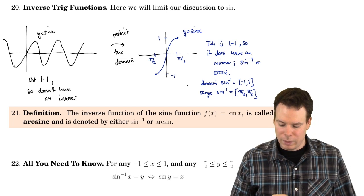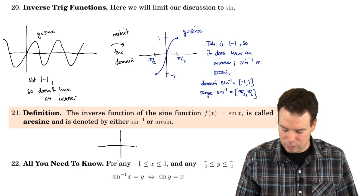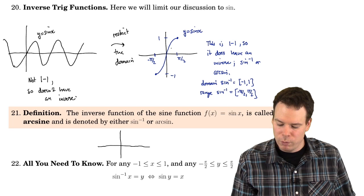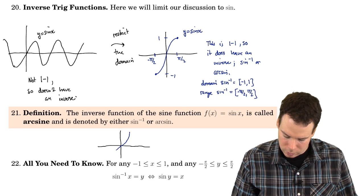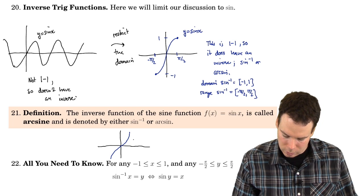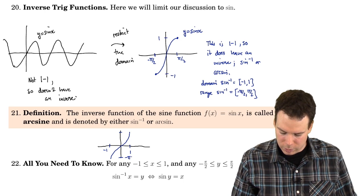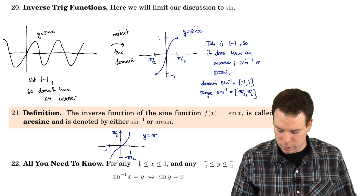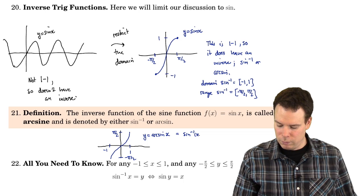How do we get its graph? We take the graph of the sine function — the restricted sine function — and we reflect it about the line y equals x. So it looks something like this. Here we have negative 1 to 1 on the x-axis, and it goes from negative pi over 2 up to pi over 2 on the y-axis. That's our y equals arcsine of x, which is also denoted by sine inverse of x.